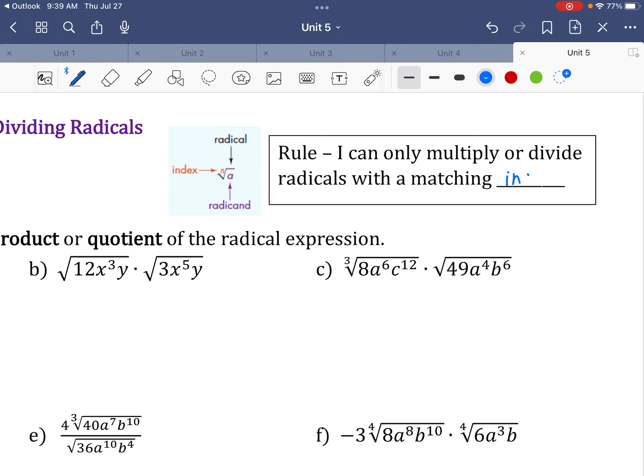All right, so you can only multiply or divide radicals with a matching index, all right? So, when you multiply or divide radicals, you cannot put them together if the index doesn't match. So, like these right here, you can't multiply these two radicals together. You can reduce each one, and then if their result does not have a radical, then you can multiply those things together.